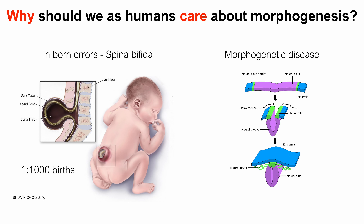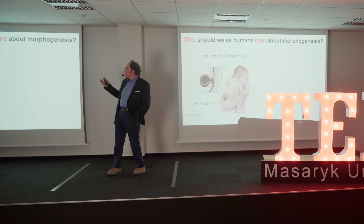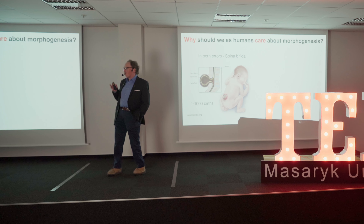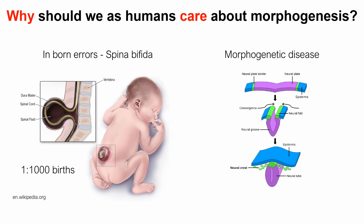Another question: what should we as humans care about something as abstract as morphogenesis? Well, maybe some of us, maybe somebody we know, maybe our loved ones, are suffering from some kind of developmental error such as spina bifida. This is actually quite common — one in a thousand births are affected by it. In its milder form you can actually lead a normal life, but you will carry the consequences throughout your life. I actually know something about it from personal experience. This is very much a morphogenetic disease: it is the failure to close the neural tube. Understanding whether this is something ancient and we have no chance to change it, or whether this is a human-specific adaptation and we can perhaps do something about it — that matters enormously.